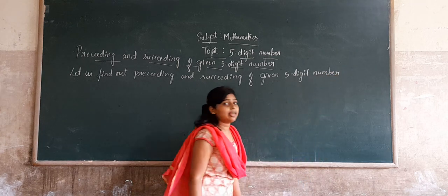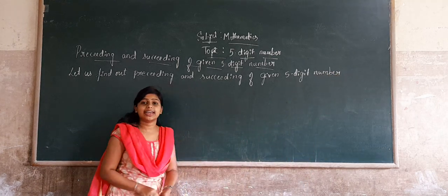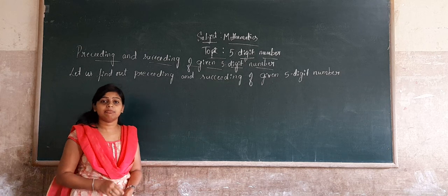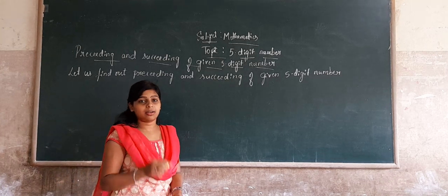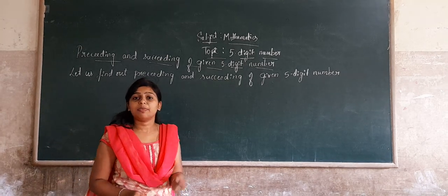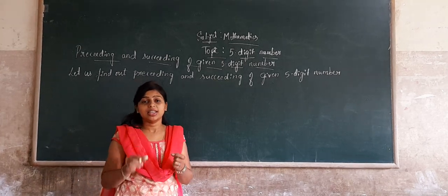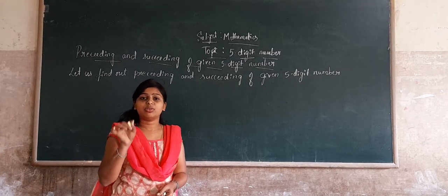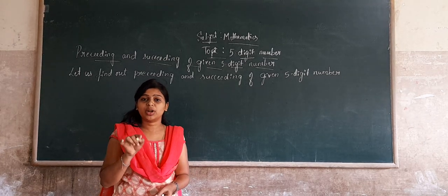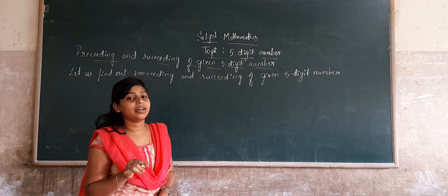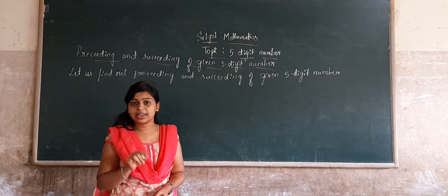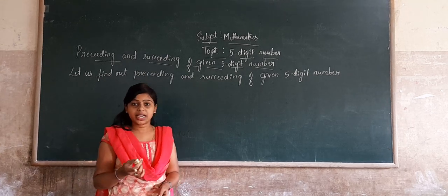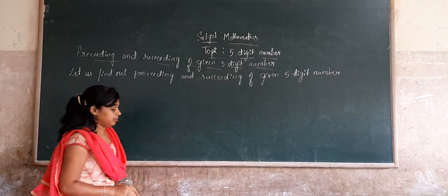Preceding number means one less than the number, and succeeding means one more than the number. For preceding, we subtract one from the given number. For succeeding, we add one to the given number.